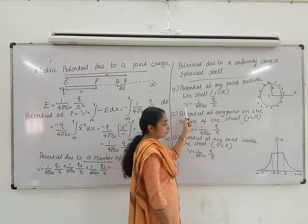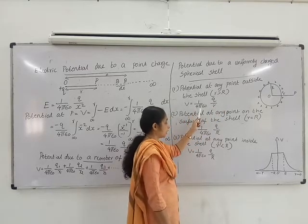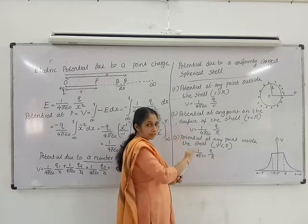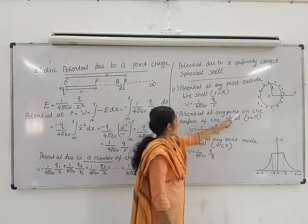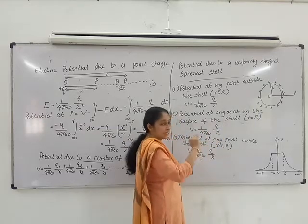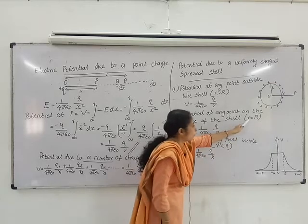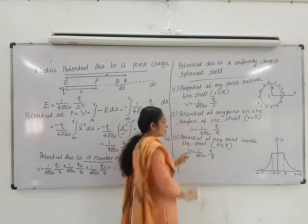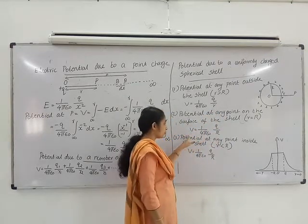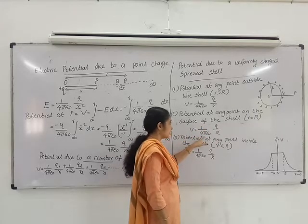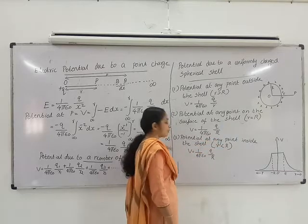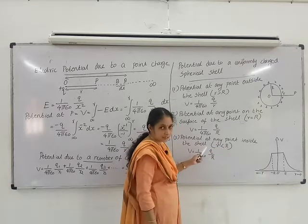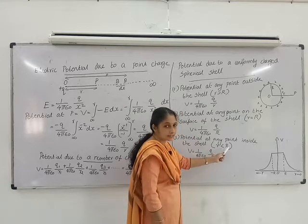Second case: the potential at any point on the surface of the shell, where small r is equal to capital R. Third case: the potential at any point inside the shell, where small r is less than capital R.